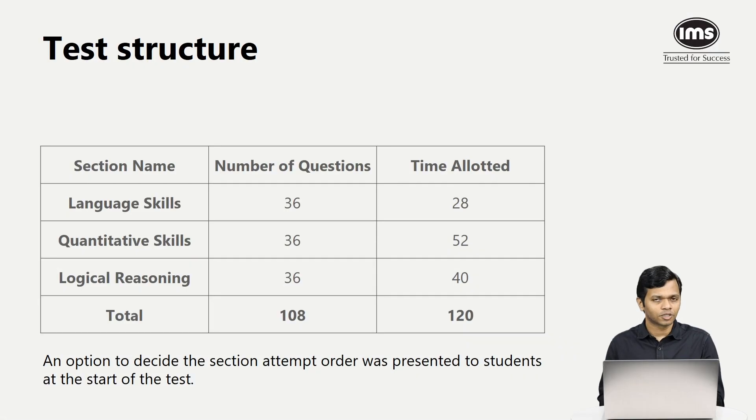Let's talk about the test structure now. The test structure didn't change from previous years. It was 36 questions in language, 36 questions in quant, and 36 questions in the logical reasoning section. For the individual sections, the time limit allotted was 28 minutes for language, 52 minutes for quant, and 40 minutes for logical reasoning, making it a 120-minute or two-hour paper.